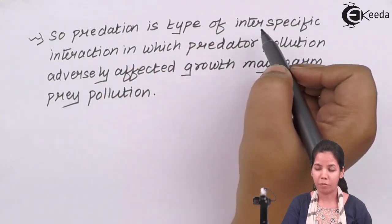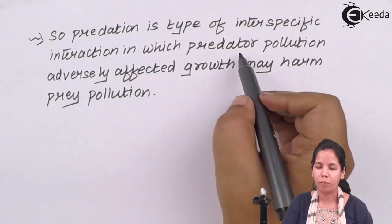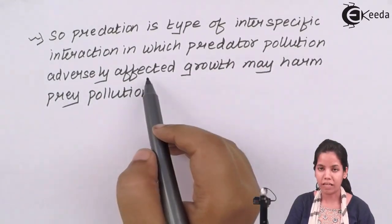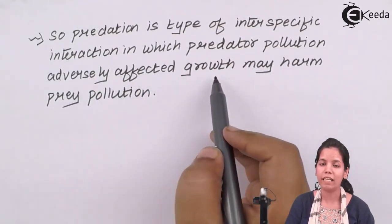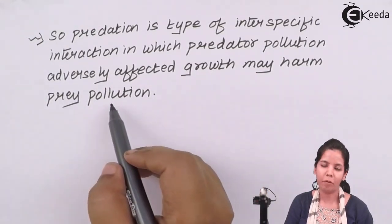So in this type of predation, what we observe is inter-specific interactions in which predator population adversely affects the growth, or you can say increased growth of predator population may harm the prey population.